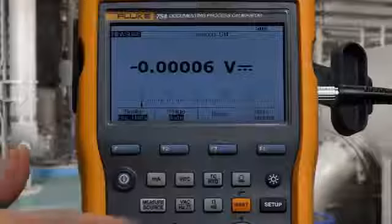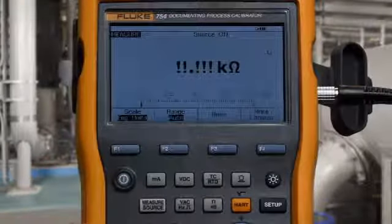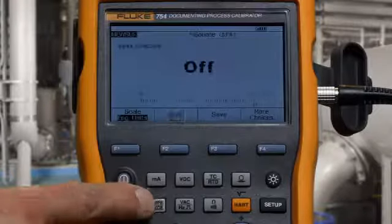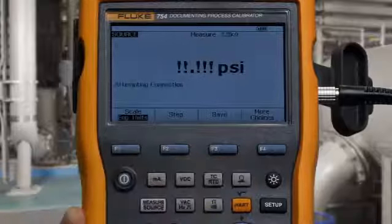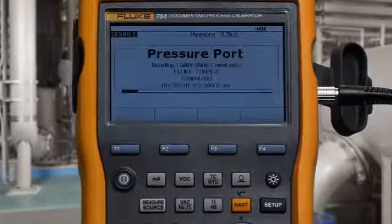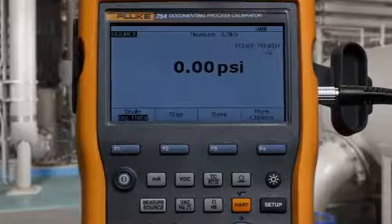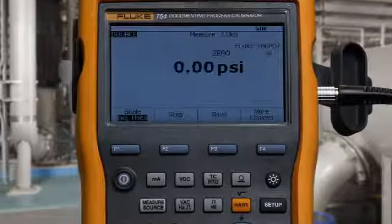To begin the test, we first want to measure resistance and source pressure. To make sure we have a good zero on our pressure module, we would select clear zero to zero out any offset.